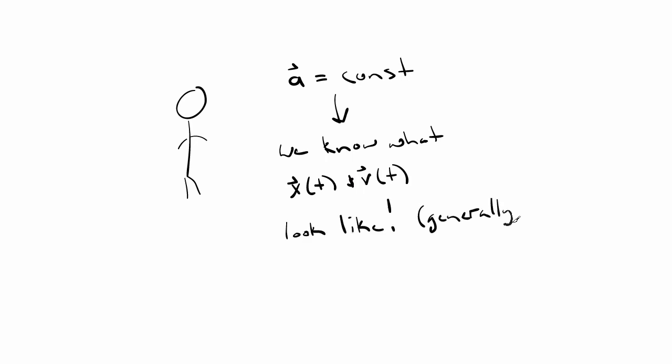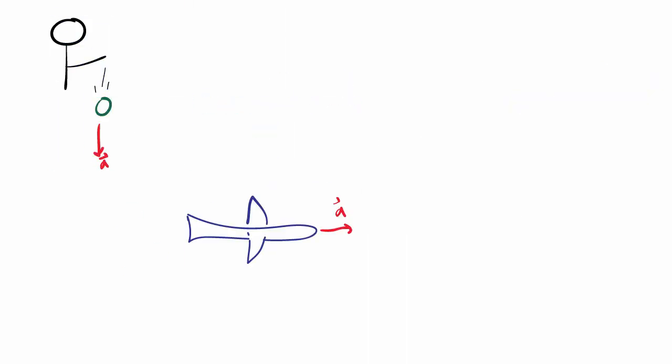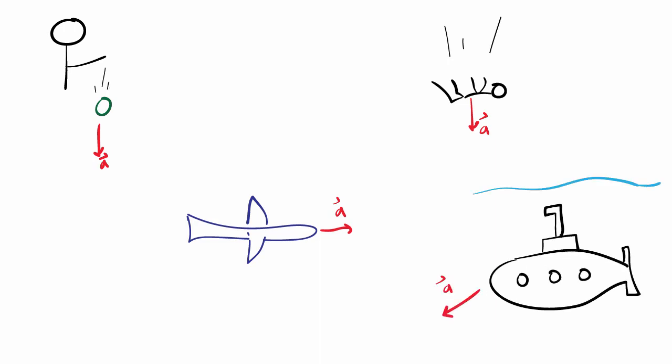So that means we can figure out the functional form of the velocity and the displacement, and that it will apply to any object that is undergoing a constant acceleration. It doesn't matter what the object is—a ball, a plane, a skydiver, a submarine. If they have a constant acceleration, then we can simply write down a function that describes their position, velocity, and acceleration as a function of time.